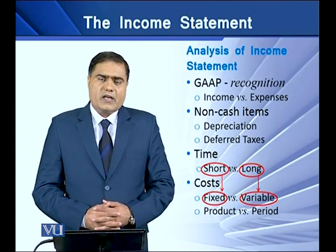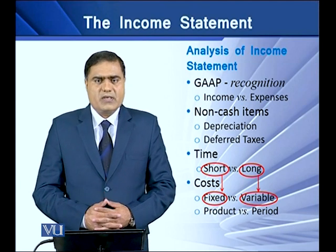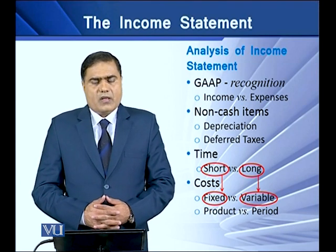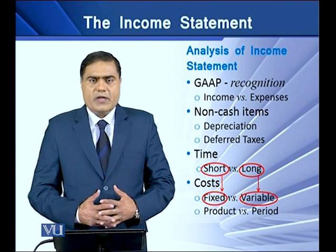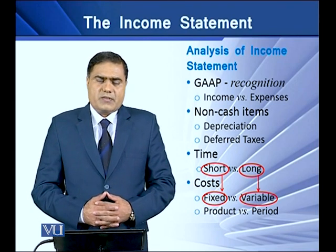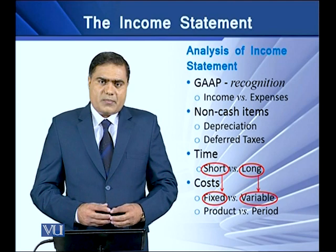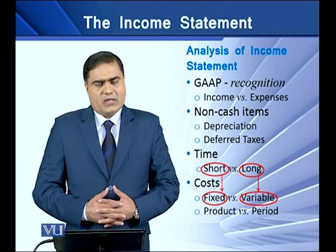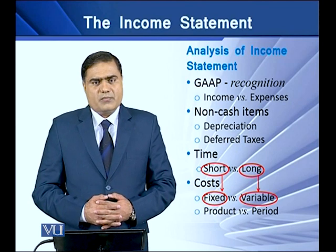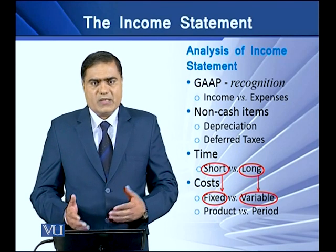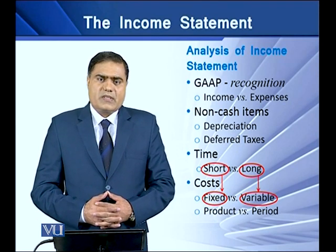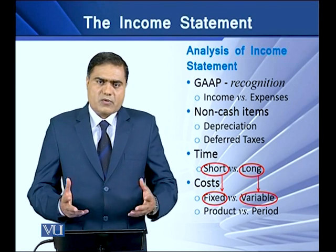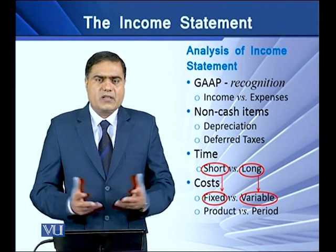While analyzing an income statement, certain points can be considered. The first is GAAP, which is generally accepted accounting principles. GAAP tells that income and expenses should be accounted on an accrual basis. This means that income should be accounted for when it is earned, so both cash and credit types of income should be recognized in the books of accounts.